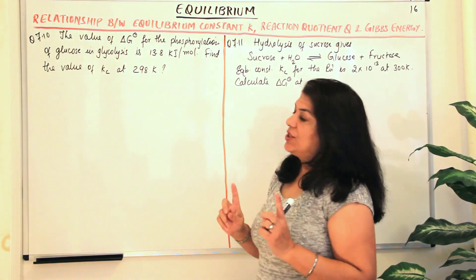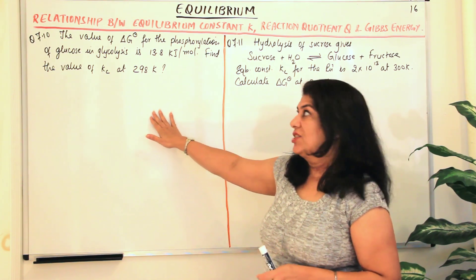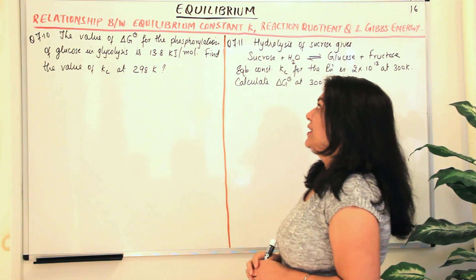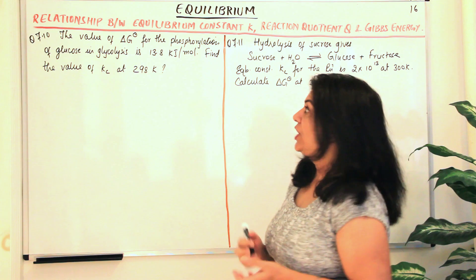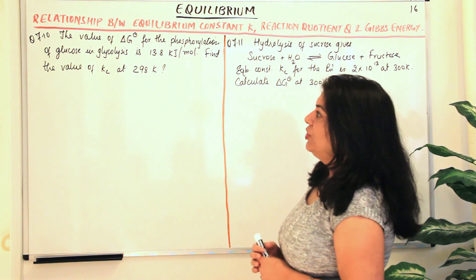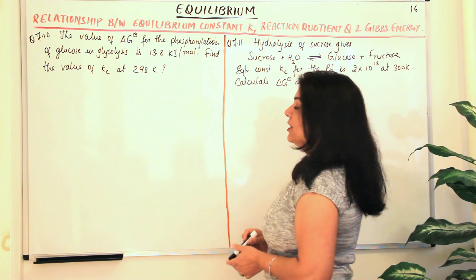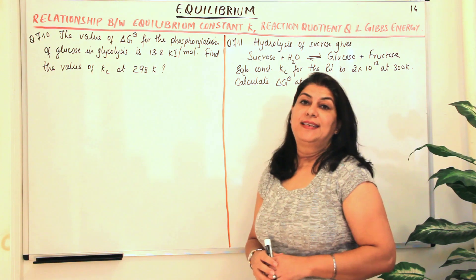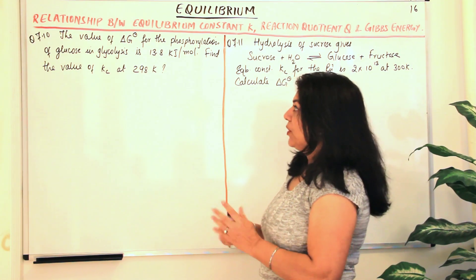Now the first question is question 7.10. It is the solved example of your NCERT textbook. The question reads the value of delta G naught, that is standard free energy change for the phosphorylation of glucose in glycolysis is 13.8 kilojoules per mole. Find the value of Kc at 298 Kelvin. Let us solve this problem.